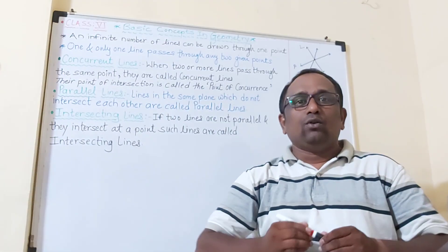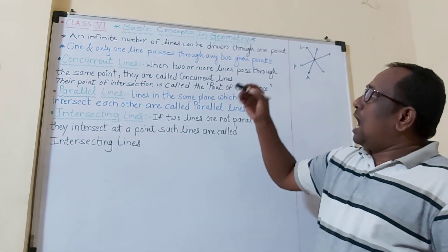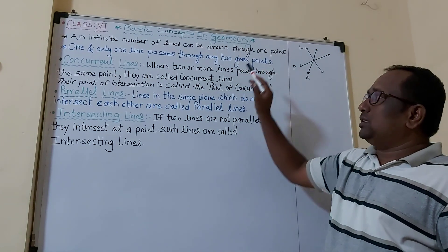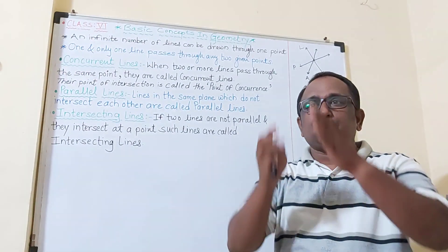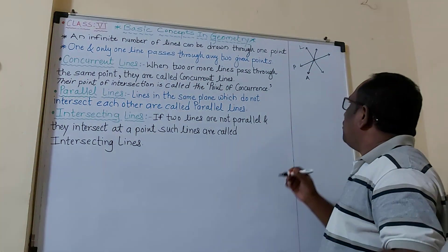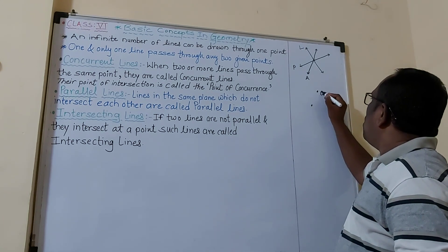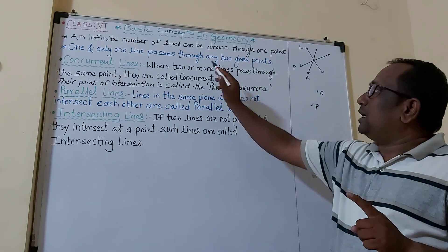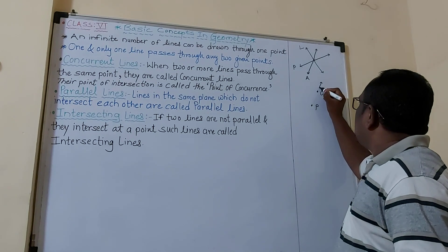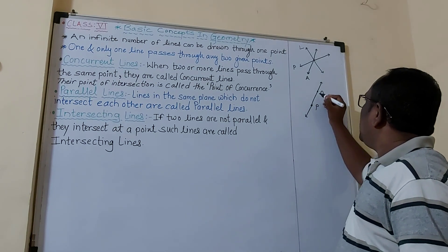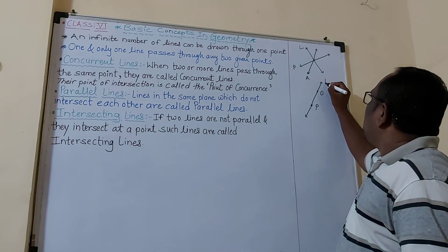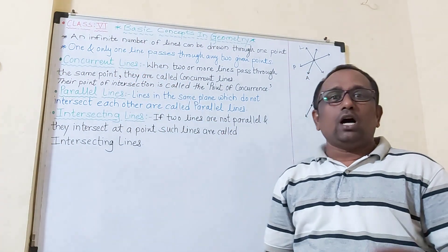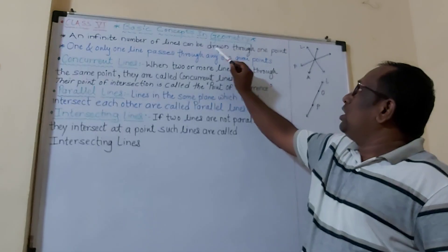Through that point you can draw a number of lines — infinite, meaning uncountable lines. Now there is another property about lines: one and only one line passes through any two given points. For example, these are two points named O and P. According to this property, only one line passes through those two points, which we can name line L.